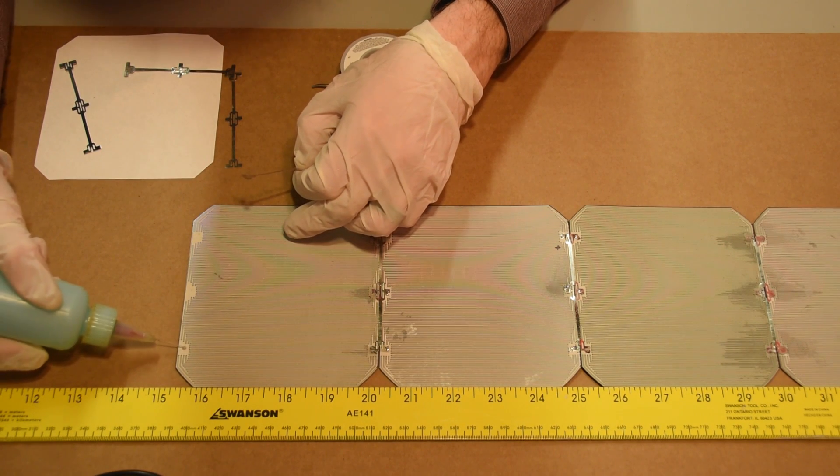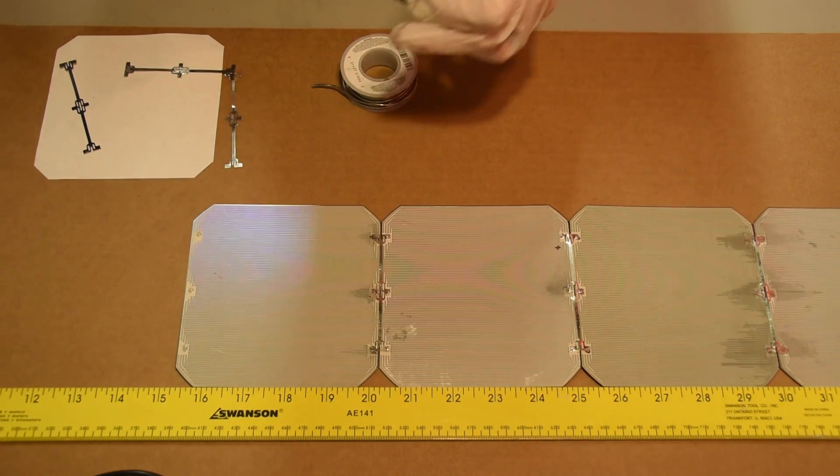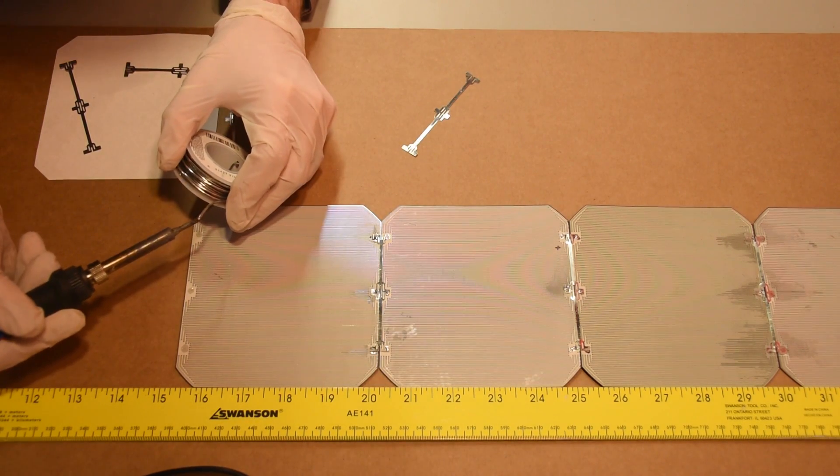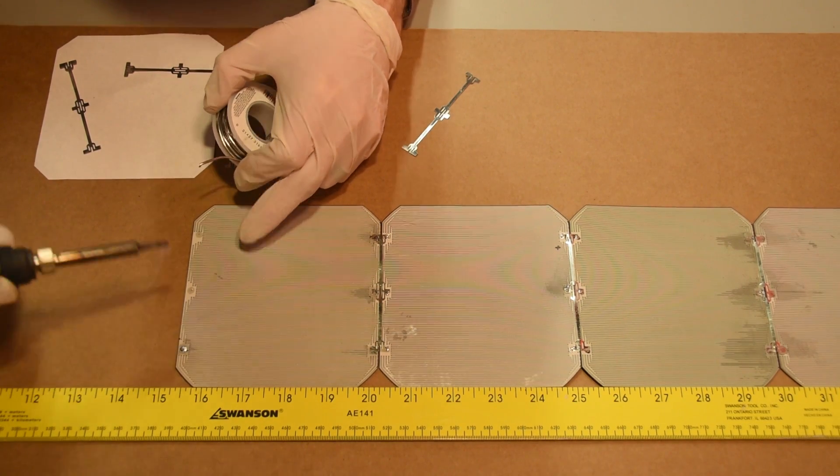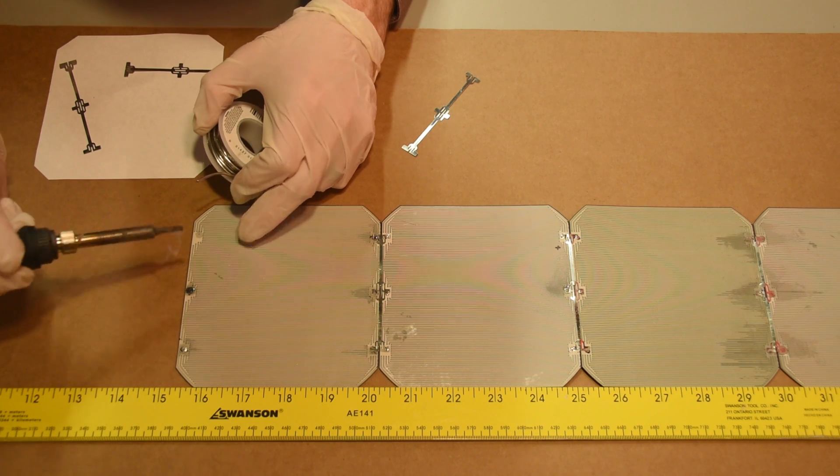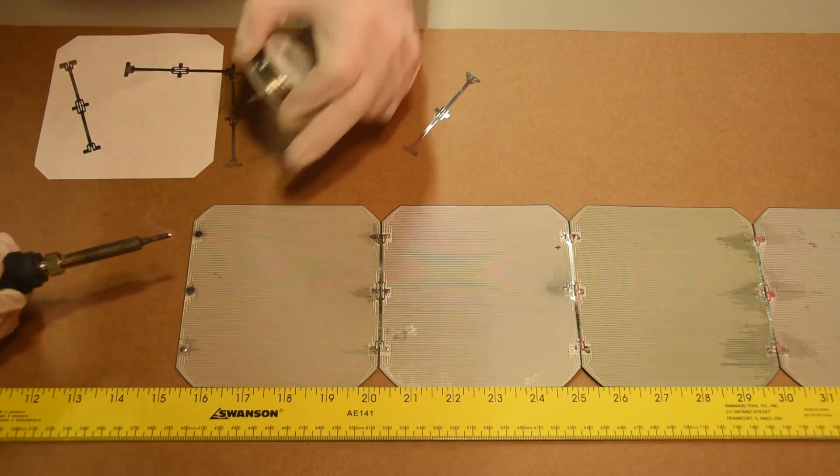I'm going to repeat the process here for the negative side. Little dab of flux. Just the tiniest dab of solder because I don't want my solder going all over the place. I want it exactly where I intend it to be. It doesn't take much.